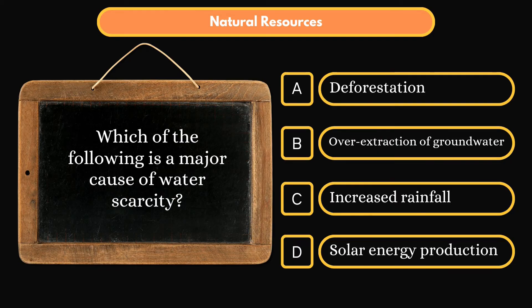Which of the following is a major cause of water scarcity? Option A: Deforestation. Option B: Overextraction of groundwater. Option C: Increased rainfall. Option D: Solar energy production. Correct answer is Option B: Overextraction of groundwater.